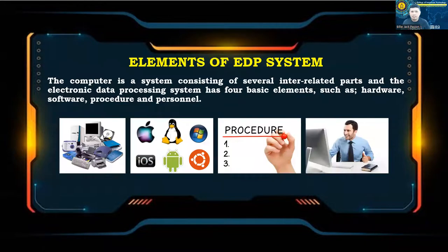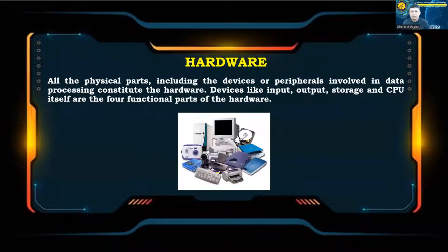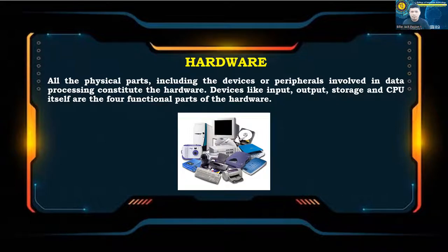The computer is a system consisting of several interrelated parts. The electronic data processing system has four basic elements: hardware, software, procedure, and personnel. All the physical parts, including devices or peripherals involved in data processing, constitute the hardware. Devices like input, output, storage, and the CPU itself are the four functional parts of the hardware.